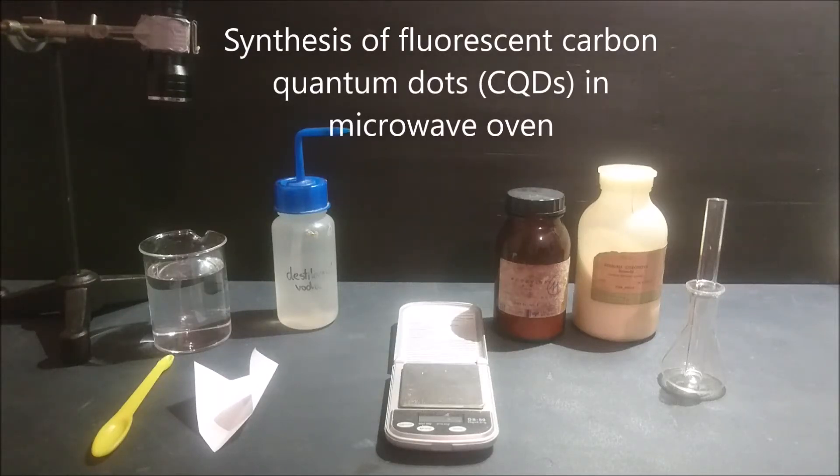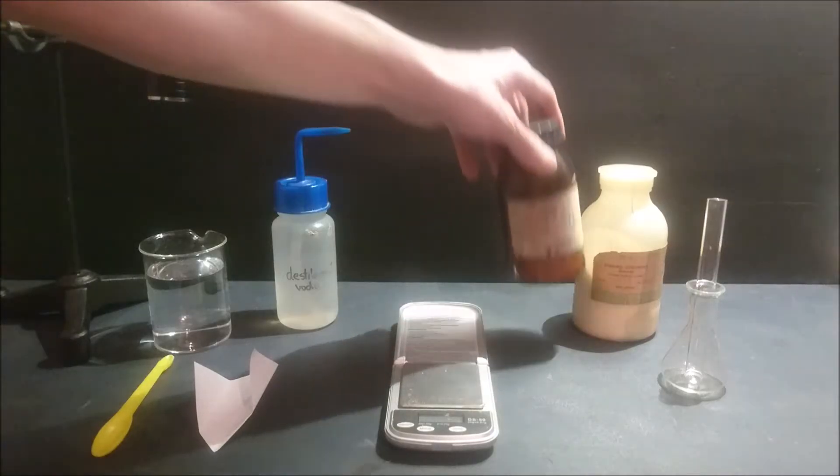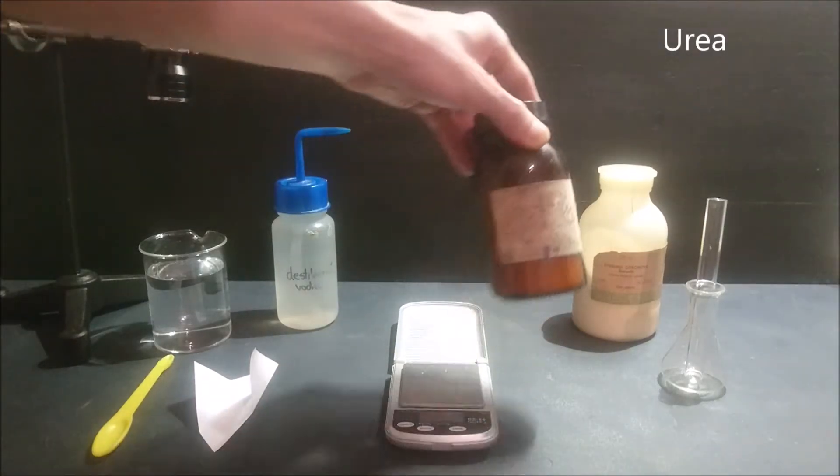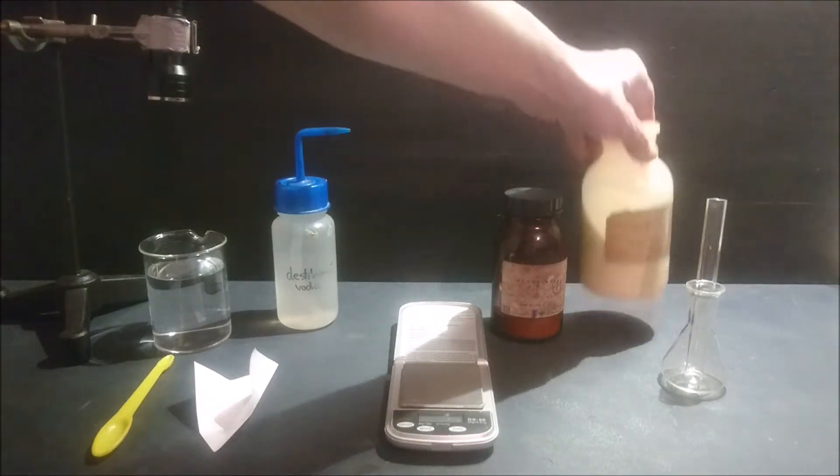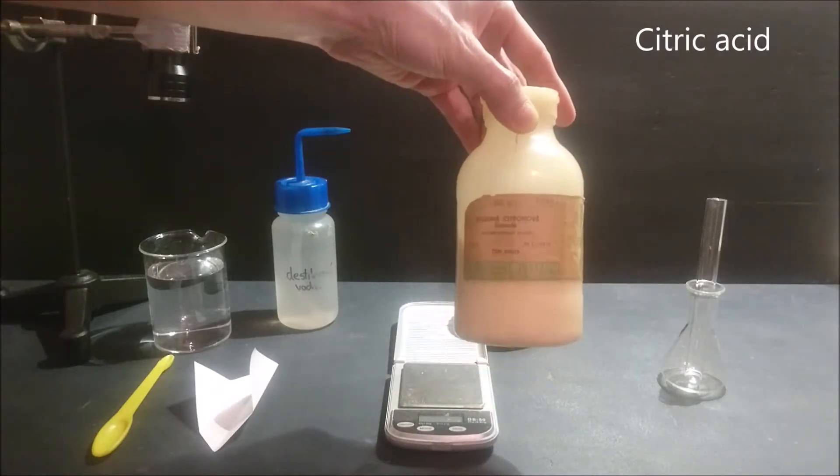Hi, I would like to show you how to make fluorescent carbon quantum dots from easily accessible reagents in a microwave oven. I will use urea and citric acid in this demonstration.